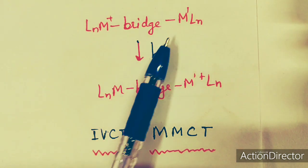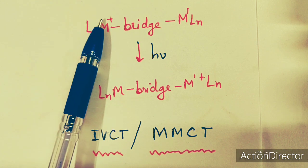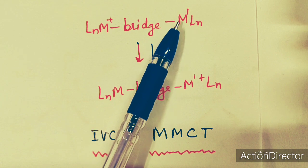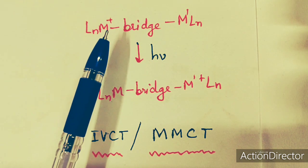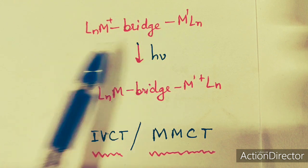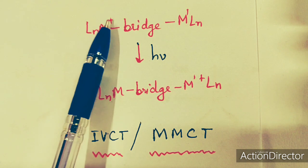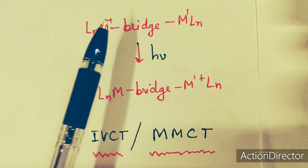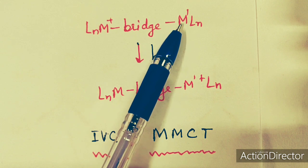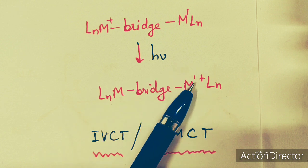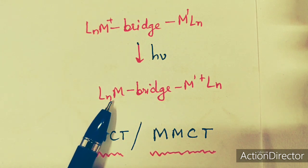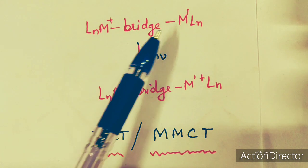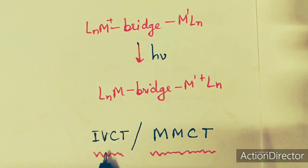In this kind of complex, one metal ion is in one oxidation state and the other metal ion is in a different oxidation state, and in between these two metal ions there is a bridge of ligand. This electronic transition takes place via a bridged ligand — it is a kind of inner sphere mechanism. The electron transfers from the metal ion with lower oxidation state through the bridging ligand to the metal ion with higher oxidation state. This is known as intervalence charge transfer transition or metal to metal charge transfer.